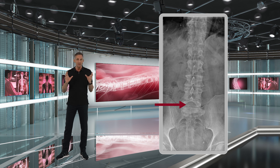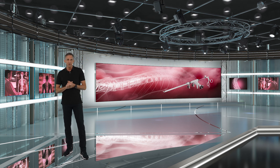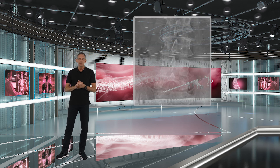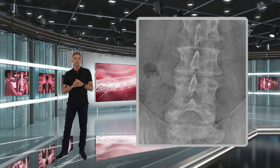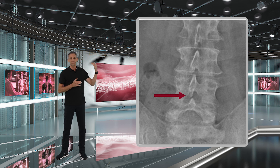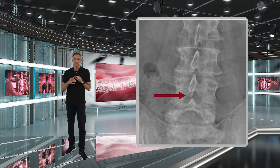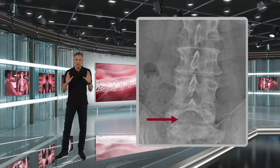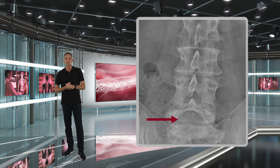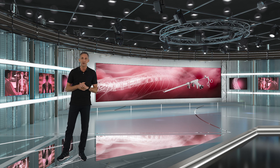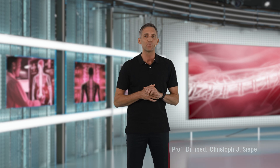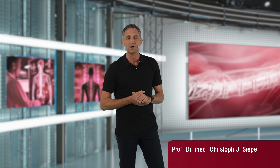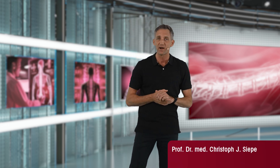L5S1 would really be the best level to start with for beginners. In the majority of cases the interlaminar window is already significantly smaller at L4-5 in comparison to L5S1. Therefore for beginners I really recommend staying with L5S1 for a while before continuing to upper levels of the lumbar spine. Later on, when you feel more comfortable and experienced, you can still go to the upper levels L4-5 or L3-4.